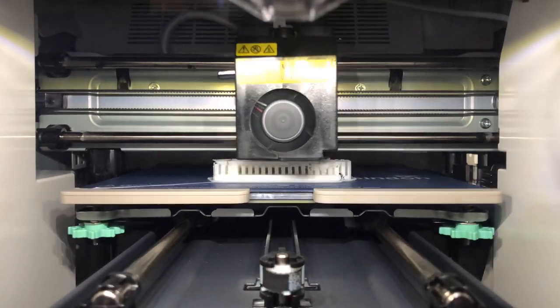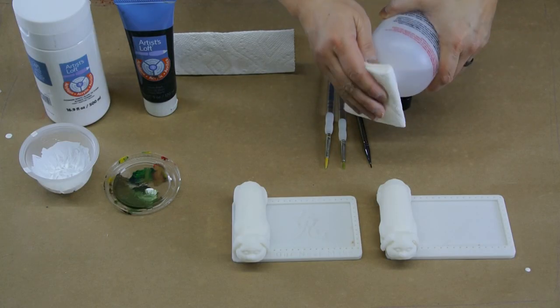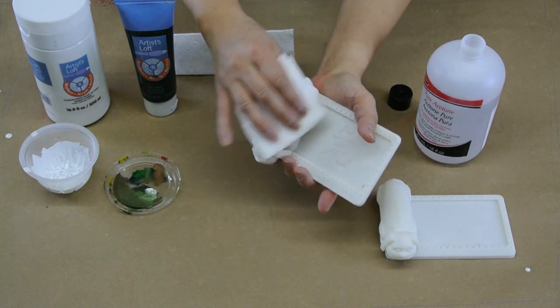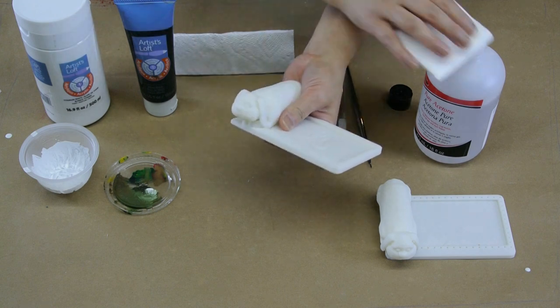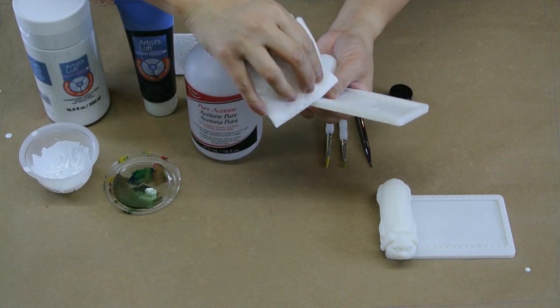I exported the STL and set up the support structures necessary to get my model printed. I find that using acetone to clean the surface helps to take off the shine and soften the surface for painting. Be careful handling acetone. It has a strong aroma and you should be careful working closely with an open container.